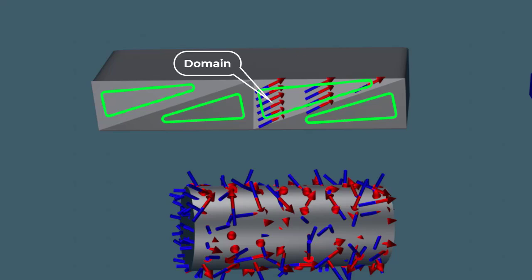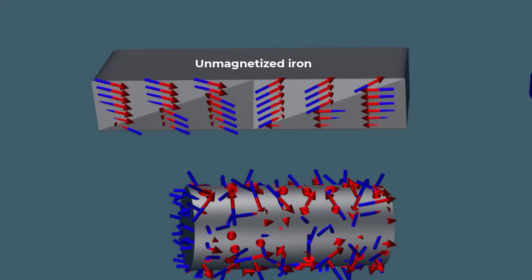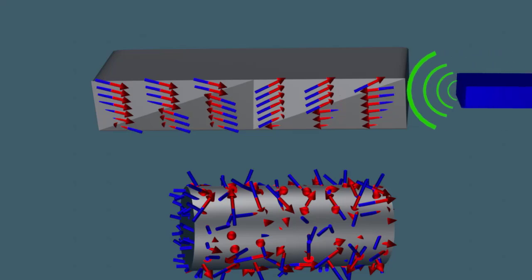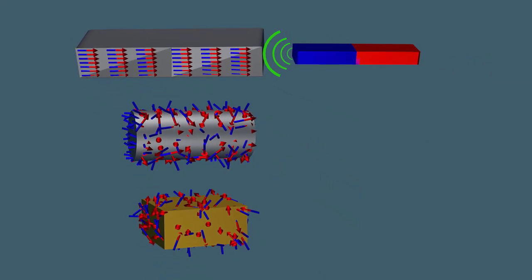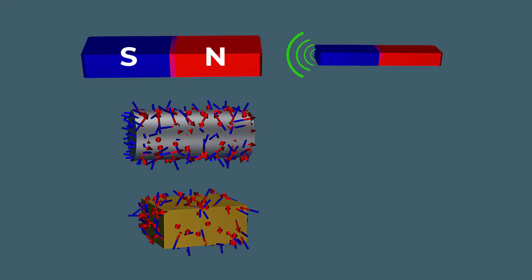The group of such aligned atoms is called a domain. In an unmagnetized piece of iron, these domains are all pointing in random directions, so their magnetic fields cancel each other out. When a piece of iron is placed in an external field, all the domains line up in the same direction, so their magnetic fields add up and create a strong permanent magnetic field, retaining their magnetic properties even after removal of the external field.